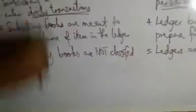And finally, number five: subsidiary books are not classified, while ledgers are classified. These are the differences between subsidiary books and the ledger.